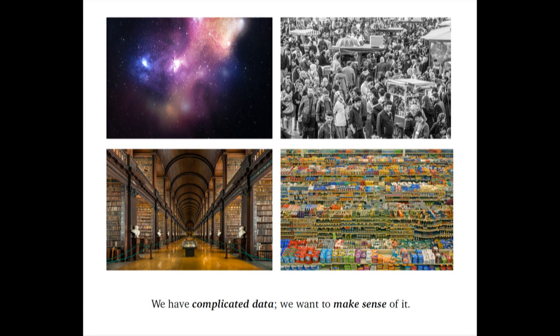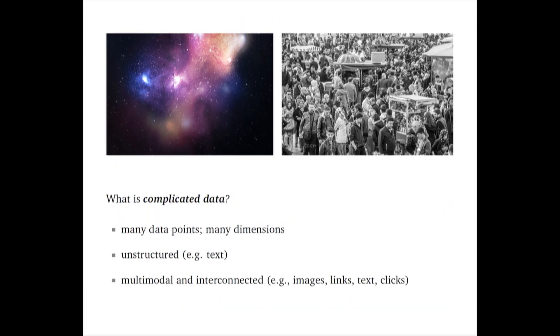I want to start, kind of like Zubin did, just to set the stage for why we care about probabilistic programming — with the same punchline but a different way of getting there, which is that we have complicated data and we want to make sense of complicated data. Especially these days, if you work in machine learning or data science or statistics, you sit around doing nothing and then data sets appear on your hard drive. What does it mean for data to be complicated? It can mean a lot of things. Traditionally it might mean that data is large — many data points and we measure many things about them.